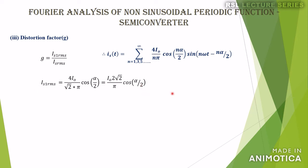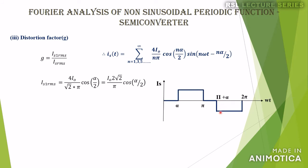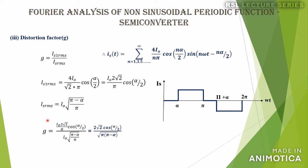IS_rms is obtained from the waveform. Since I0 is the magnitude of the IS waveform and (pi minus alpha) is the conduction period during each half cycle, IS_rms equals I0 times √[(pi minus alpha)/pi]. Substituting IS1_rms and IS_rms into the distortion factor equation, the distortion factor g equals 2√2 cos(alpha/2) divided by √[pi(pi minus alpha)].